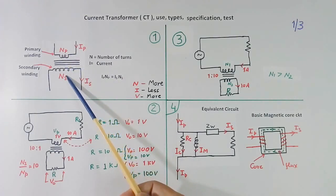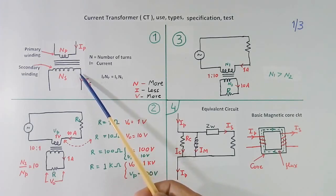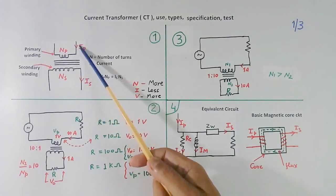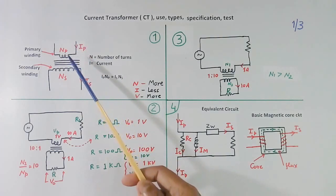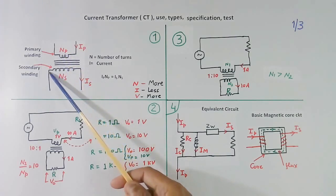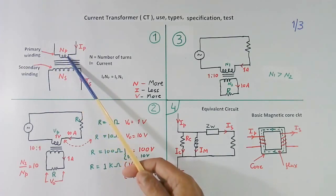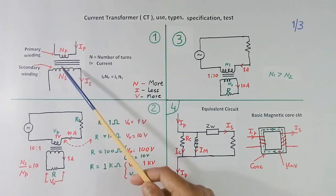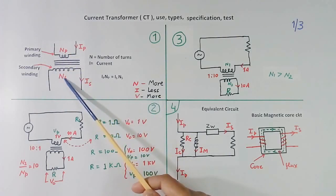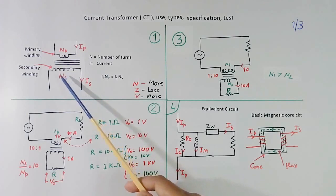CT is basically an instrument transformer which produces current in secondary proportional to primary. Generally, secondary turns will be more than primary. And when turn is more, current will be less and voltage will be more. So if these turns are more than this, we will get less current. If here current is 10, we will get only 1. Or we can say we will get more voltage. So this is basically step up transformer.